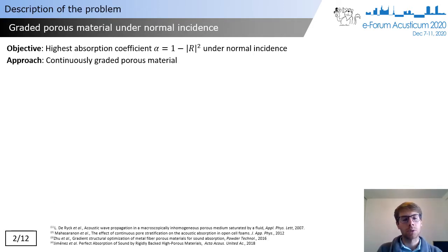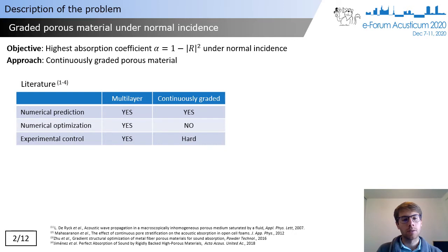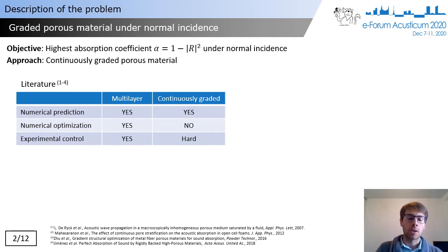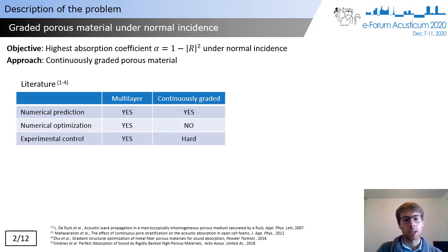One way to get a higher absorption coefficient using porous materials is to use graded porous materials. In the literature, multi-layer porous materials are well described — we know how to predict their behavior, how to optimize them, and how to manufacture them. The problem with multi-layers is that they are composed of a few layers, meaning their gradient might not be optimal. One way to address this is to use continuously graded porous materials, but there is no optimization procedure for them in the literature, and we don't know how to manufacture them with good control of the microstructure.